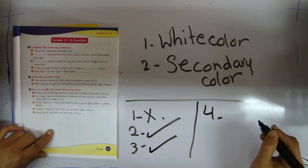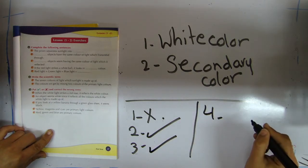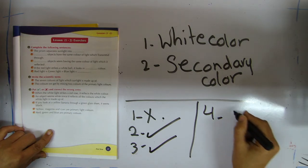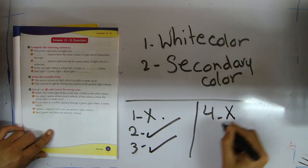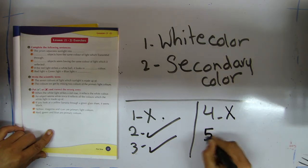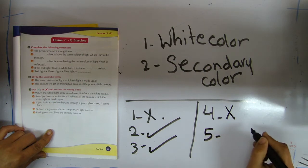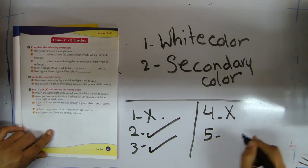Number four: yellow, magenta, and cyan are primary colors. It's wrong — they are secondary colors. Red, green, and blue are primary colors. It's correct.